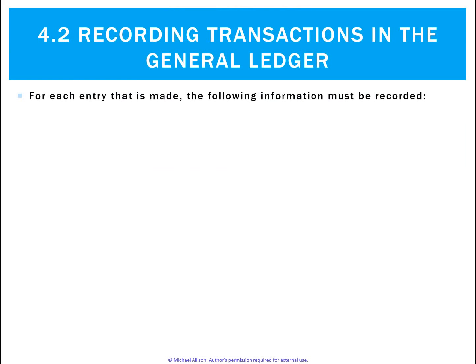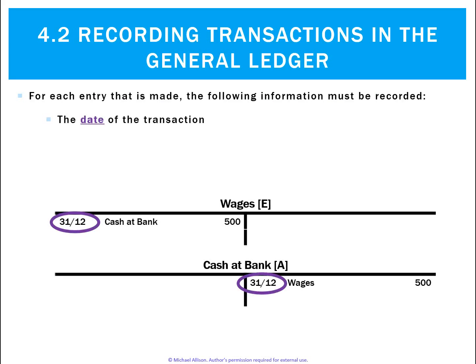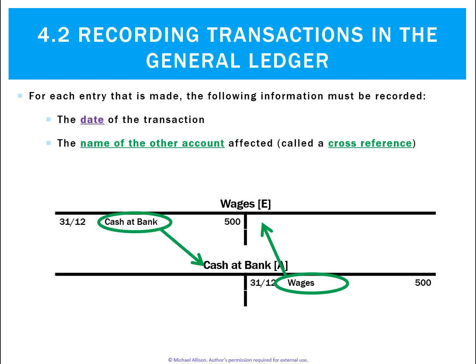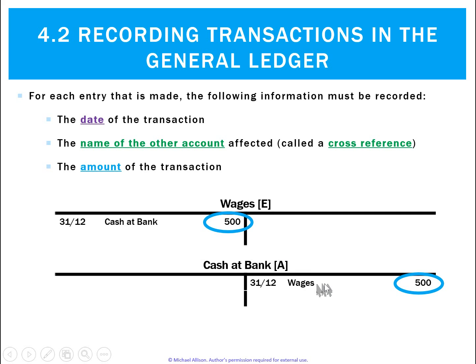The following information has got to be recorded for every entry in the ledger. We want to note the date of the transaction and record the name of the other account — that's called a cross-reference. For example, in wages, that was a debit, and the matching credit could be found in cash at bank. And in cash at bank, the credit will find a matching debit in the ledger called wages, so wages will be our cross-reference. Lastly, we record the amount.